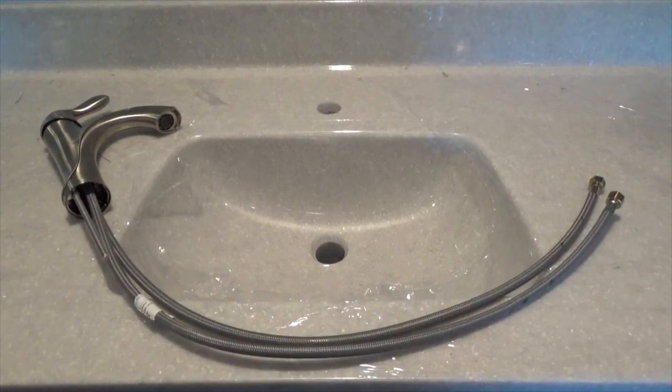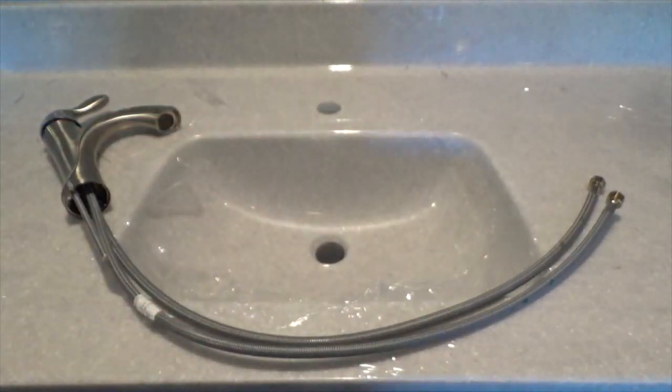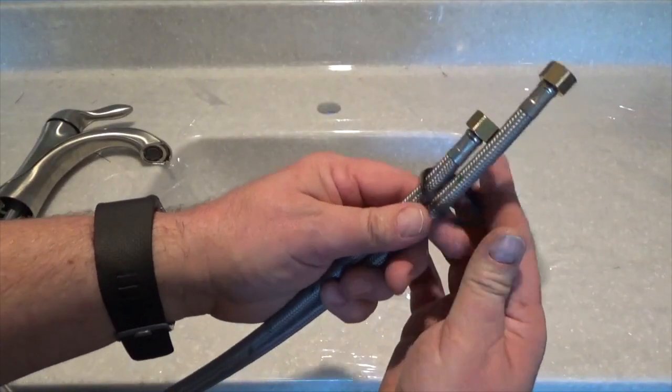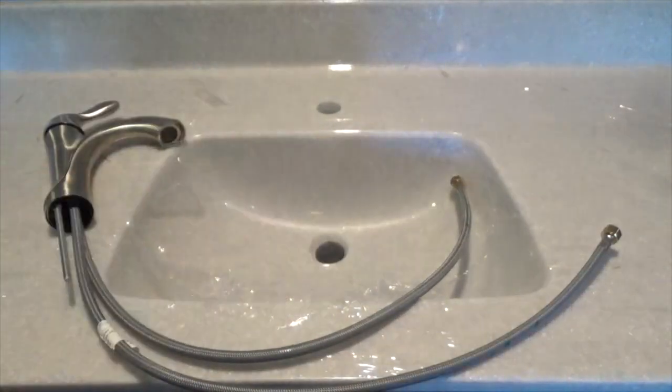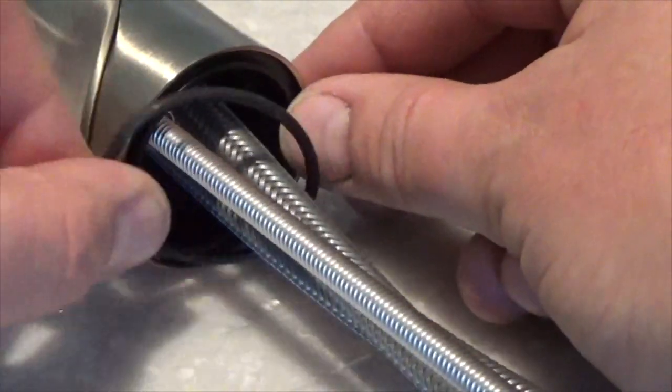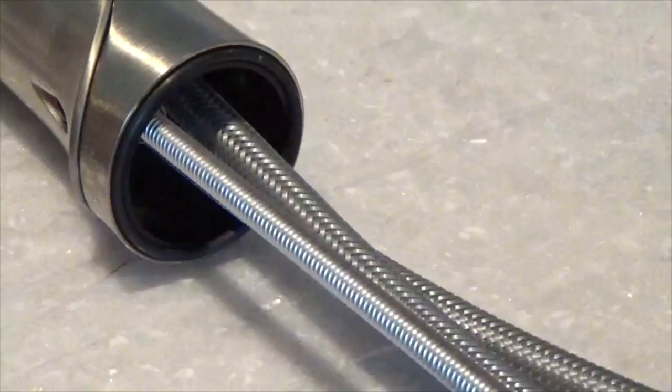Lay the faucet out in this manner. Take the gasket and slide it over the supply lines and the mounting stud. Do the same with the O-ring. Install the gasket into the faucet body and then assemble the O-ring seal to the gasket.